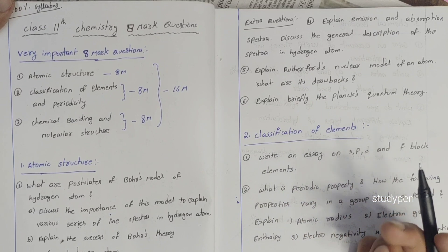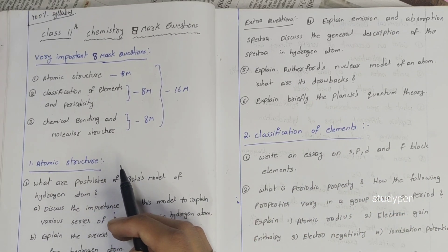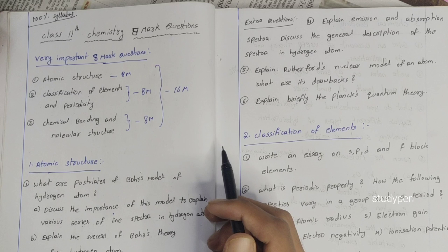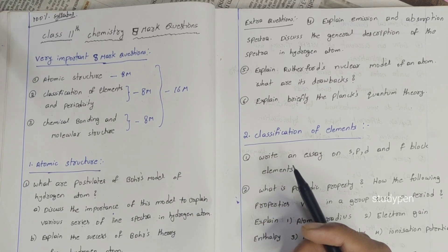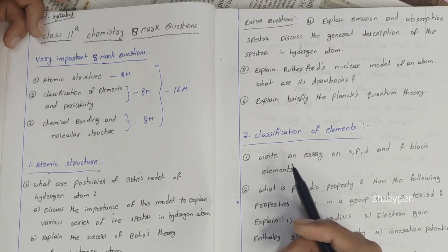We have three lessons about eight marks: atomic structure, classification of elements and periodicity, and chemical bonding and molecular structure. So we have eight marks questions.